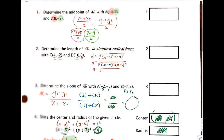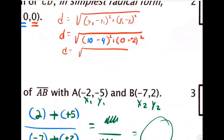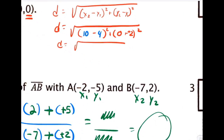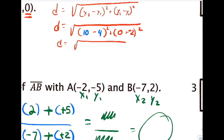A little correction here on number 2. That part was right. 10 minus 4 is 6, squared. 0 plus 2 is 2, squared. In the video, I didn't square that part.